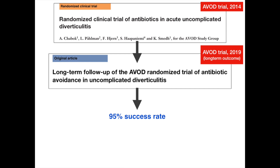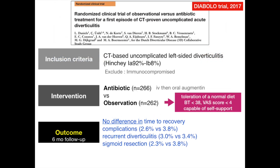They also published a long-term outcome paper reporting a 95% success rate without antibiotics. The next RCT is the Diabolo trial, also a multicenter trial comparing antibiotics versus non-antibiotics for the first episode of uncomplicated diverticulitis. Interestingly, this trial also included Hinchey 1B patients. The outcome was the same as the AVOD trial: no difference in time to recovery, complications, recurrence, or sigmoid resection rate.